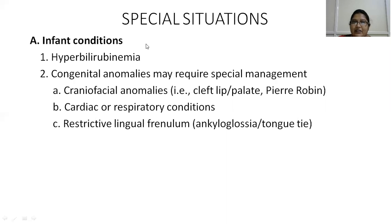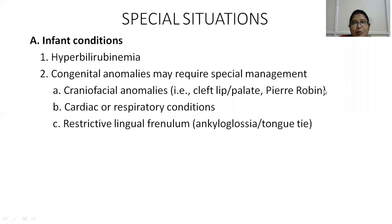Special situations are divided as infant and maternal conditions. In infant conditions, hyperbilirubinemia is not a contraindication for breastfeeding — we should actually breastfeed more as it promotes gut motility and excretion of bilirubin. Only in cases of severe hyperbilirubinemia and breast milk jaundice should breastfeeding be avoided. Other congenital anomalies requiring special management include craniofacial anomalies like cleft lip, palate, and Pierre Robin sequence, in which there is improper latching — we should use modified positioning, obturators, and nipple sheaths to promote effective latching.